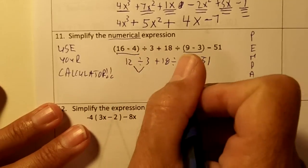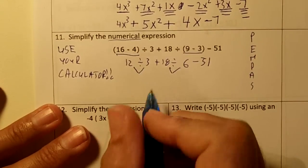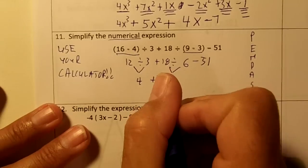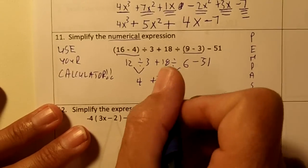We need to divide here and divide here. 12 divided by 3 is 4. 18 divided by 6 is a positive 3 minus 51.